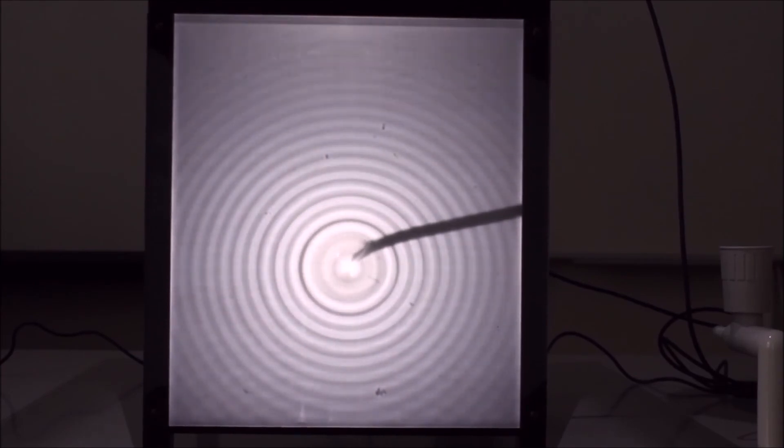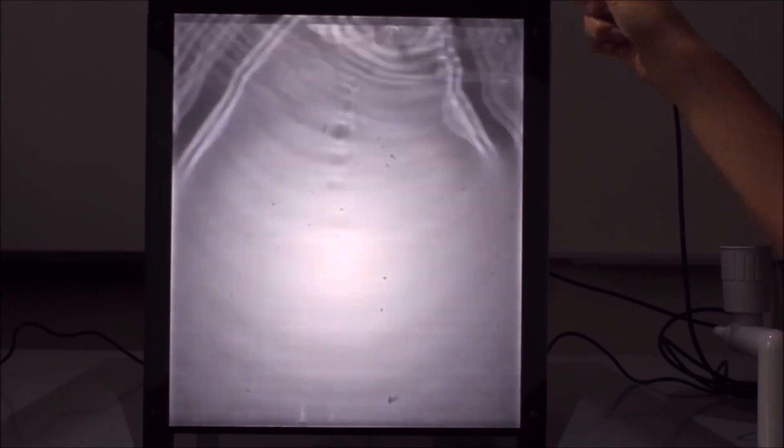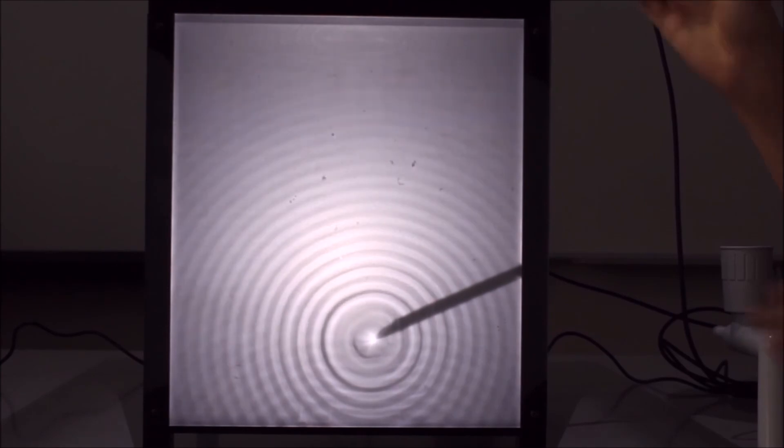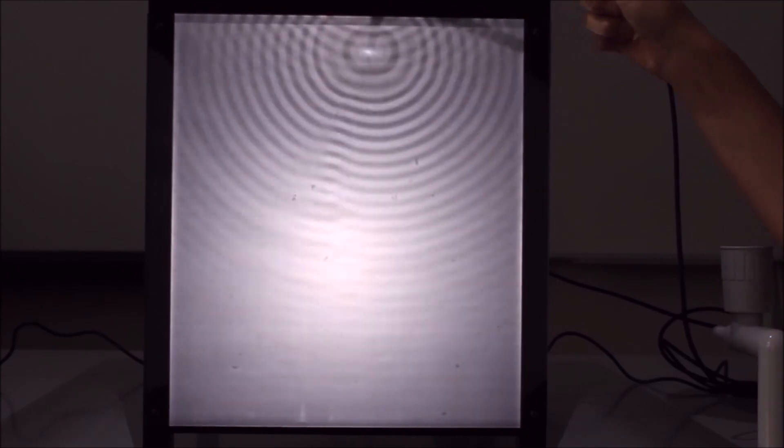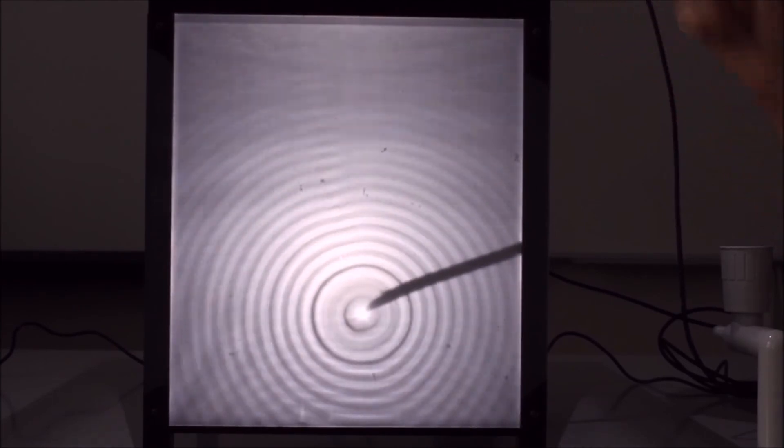Próbáljuk meg! Látható a rezgéskeltő két oldalán, az a sötét V-alap. Ez az úgynevezett Mach-kúb.